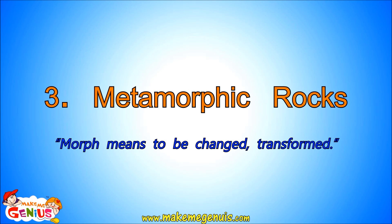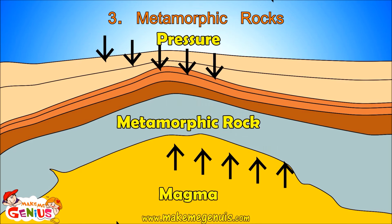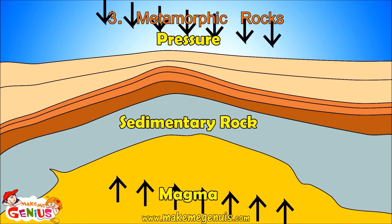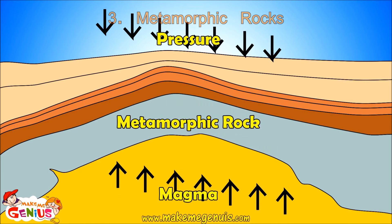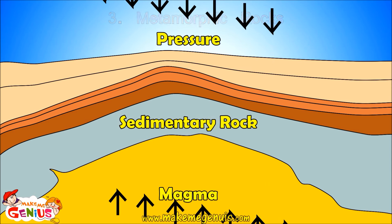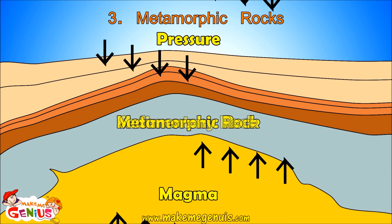You understood right. Metamorphic rocks are changed forms of igneous and sedimentary rocks. Metamorphic rocks are formed when other types of rocks are changed due to a lot of heat or pressure.